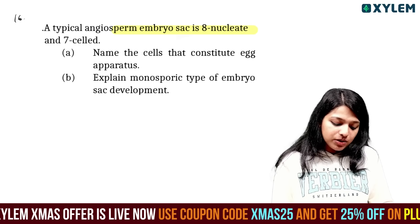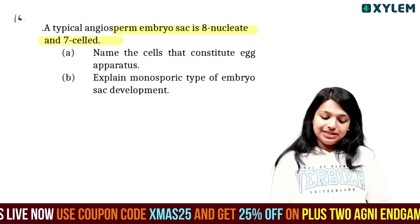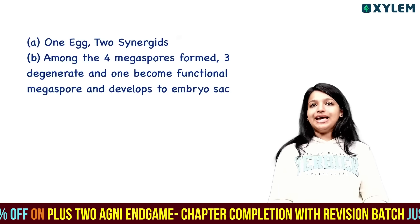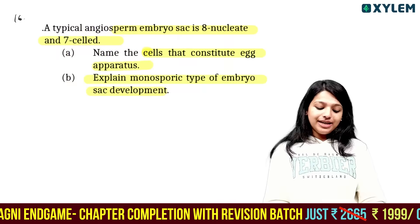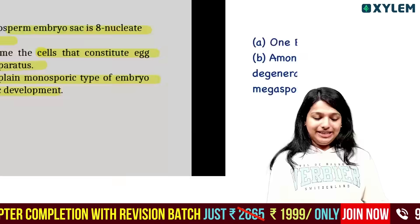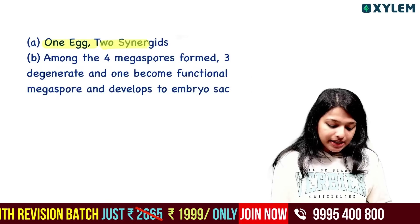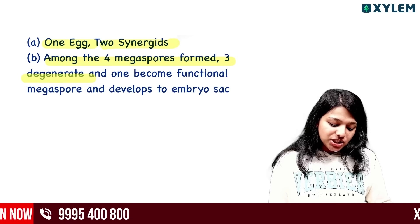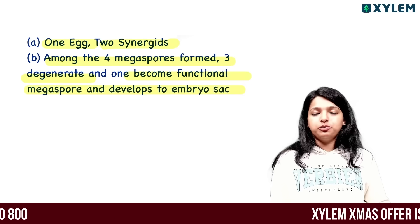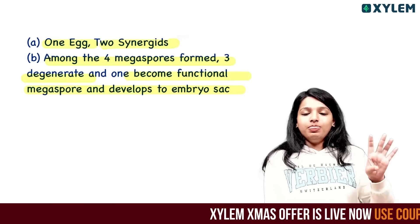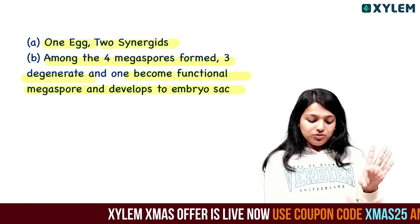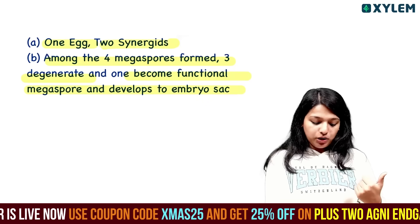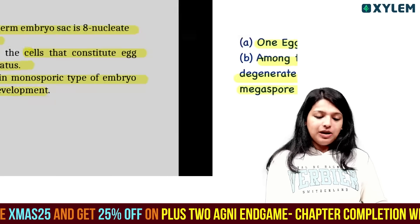A typical angiosperm embryo sac is 8-nucleate and 7-celled. The egg apparatus consists of one egg cell and two synergids. Explain monosporic type of embryo sac development: among the four megaspores formed, three degenerate and one becomes the functional megaspore, which develops into the embryo sac. This is called monosporic development.